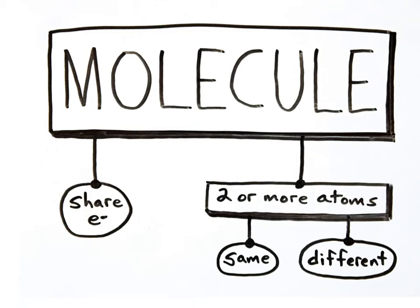We learned that ions gain or lose electrons, but electrons can also be shared between two or more atoms. Atoms that share electrons bond together to form larger chemical substances called molecules.